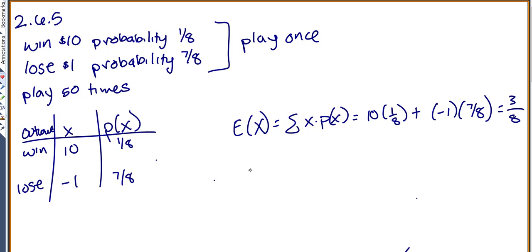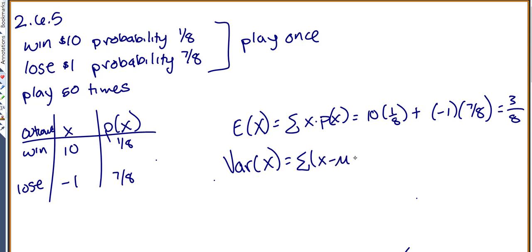Now we need to find the standard deviation, but before that, we have to find variance. Variance is computed by taking each x value minus the mean, which we just found to be 3/8, squaring it, and multiplying by the probability of that x value.